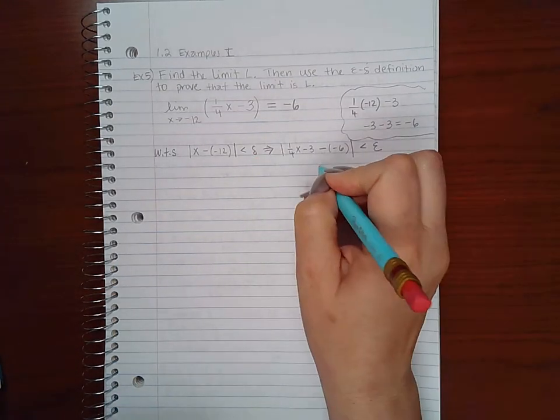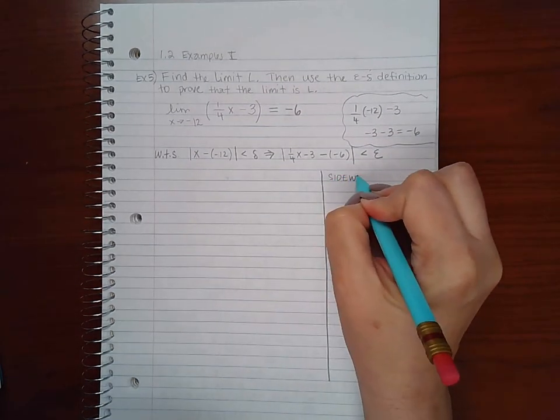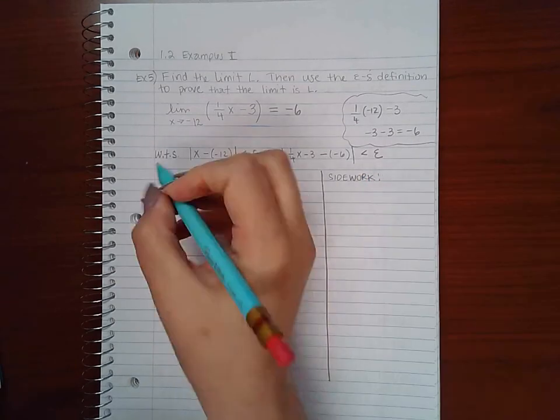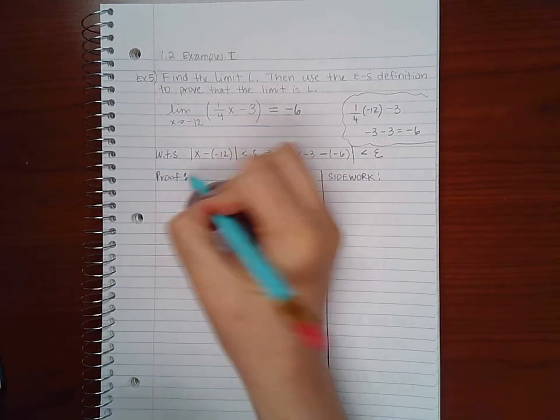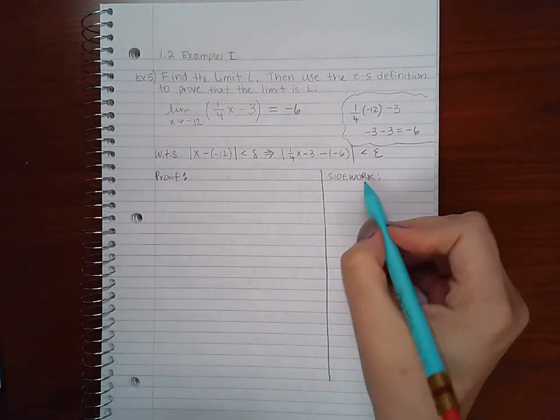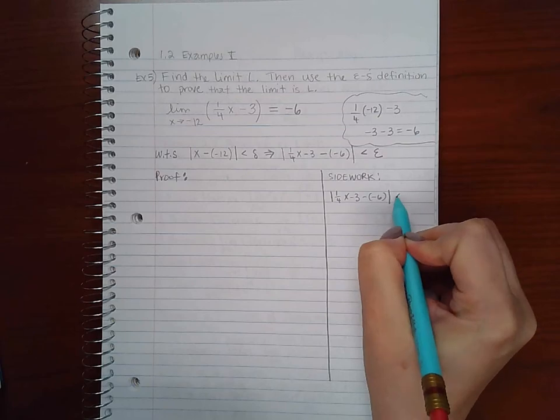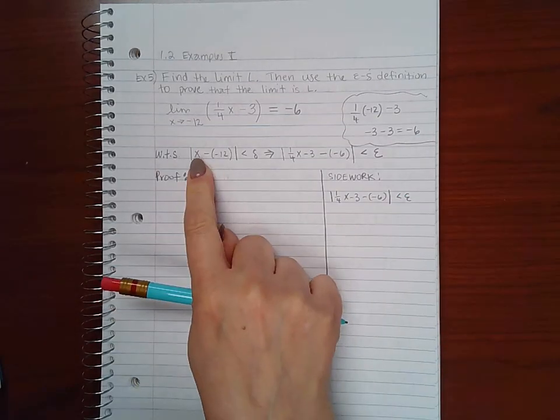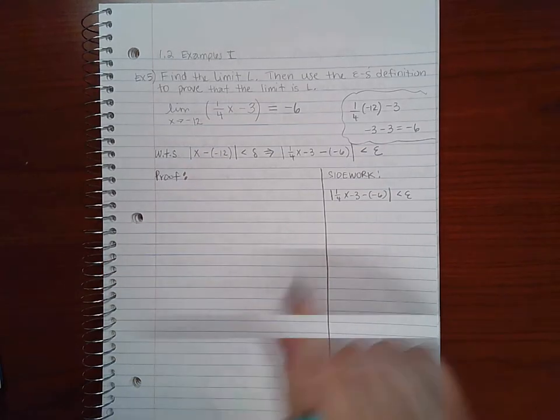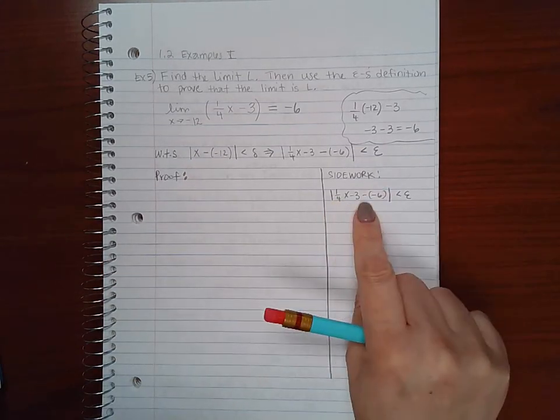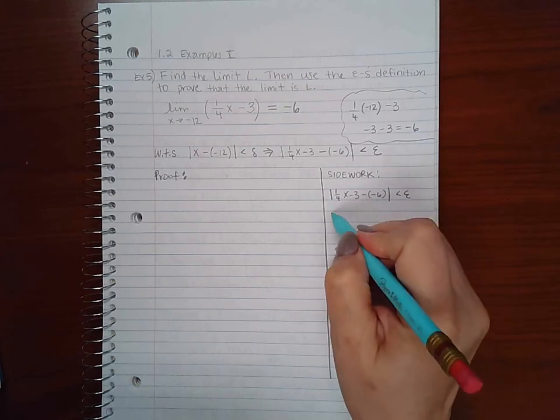We're going to do our side work over here, and I always label it side work so that my reader can tell the difference between my proof and just the stuff I'm doing on the side. I'm going to start with the right hand side and I want just |x minus negative 12| on the inside. Another way of looking at that is |x plus 12|, so if I can get x plus 12 on the inside by itself, I've done the same thing. Let's first combine our like terms.